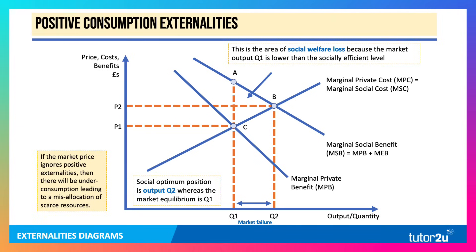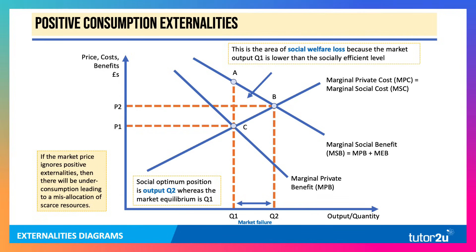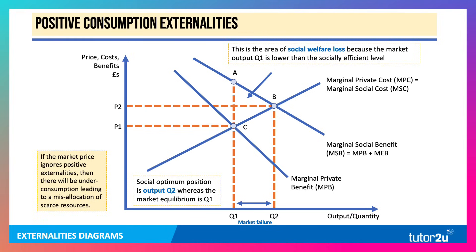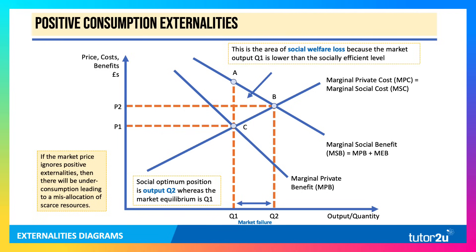With positive consumption externalities, the market price often ignores the extra external benefits from consuming goods and services. Education, healthcare, and vaccinations would be good examples. As a result, there is underconsumption. The private optimum is Q1, where private cost equals private benefit. The social optimum is output Q2, so there is underconsumption. The area of social welfare loss — because the market output Q1 is lower than the social optimum — is the area A, B, C.